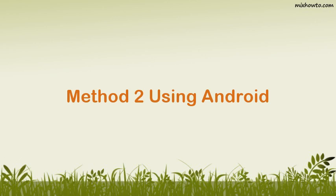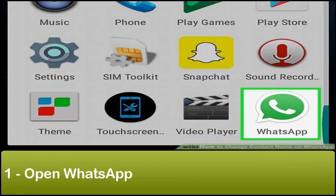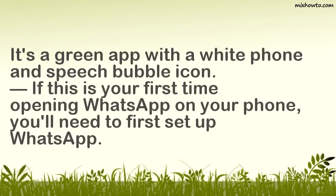Method 2: Using Android. Step 1: Open WhatsApp — it's a green app with a white phone and speech bubble icon. If this is your first time opening WhatsApp on your phone, you'll need to first set up WhatsApp.